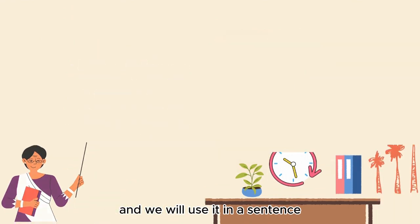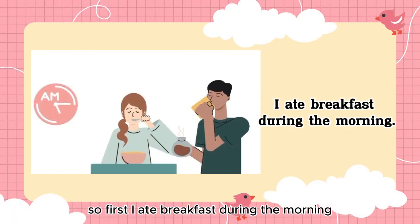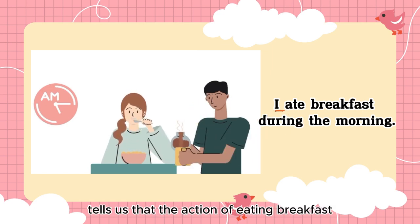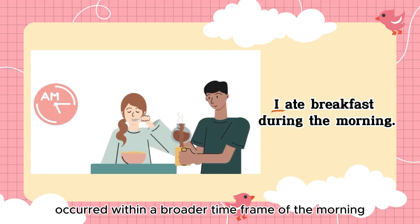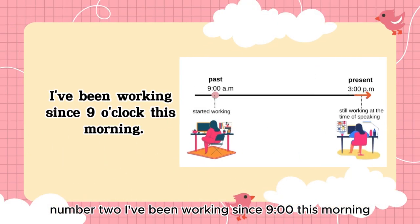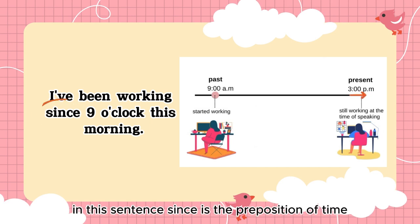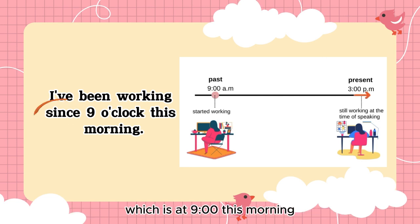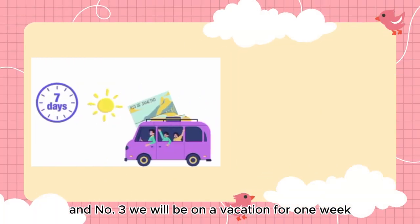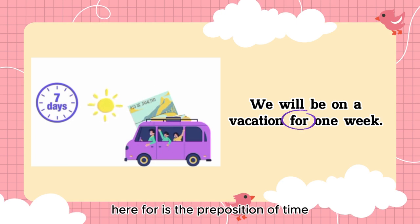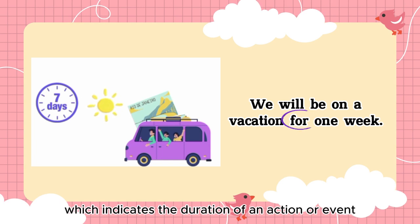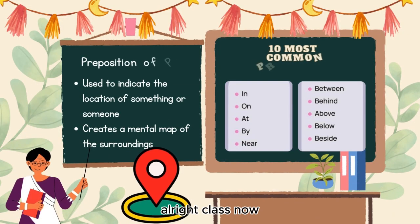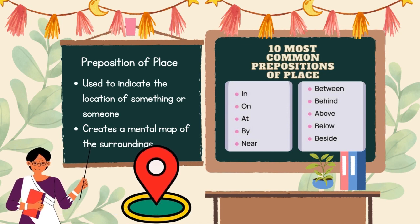Now let's look at three examples of prepositions of time in sentences. First: 'I ate breakfast during the morning' — 'during' indicates a period within which something happens, telling us that eating breakfast occurred within the broader time frame of the morning. Second: 'I've been working since nine o'clock this morning' — 'since' marks the starting point of an action, telling us when working began. Third: 'We will be on vacation for one week' — 'for' indicates the duration, telling us how long the vacation will last.